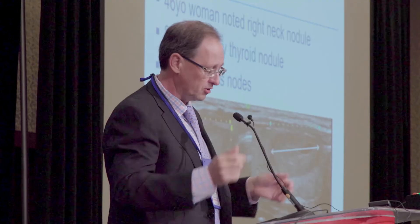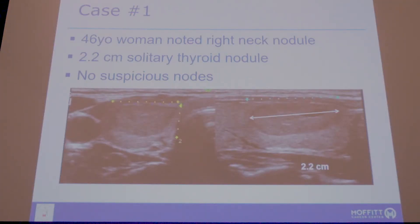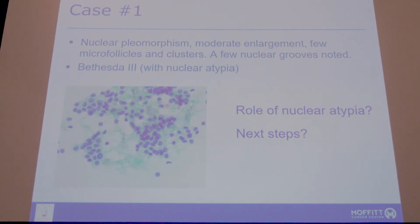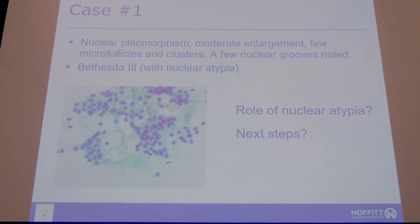An elegant summary of where we stand. Let me walk through a case: a 46-year-old woman with a 2.5 cm solitary thyroid nodule and no suspicious lateral lymph nodes. A biopsy was performed, and under Bethesda version 1 it was called Bethesda 3 with some nuclear atypia, pleomorphism, a little bit of enlargement, and a few nuclear grooves — not enough to call it Bethesda 5 but enough to label it as atypical. Now with NIFTP in the equation, how would you approach this sample at this point in the patient's workup?